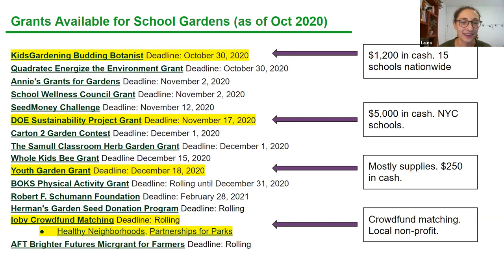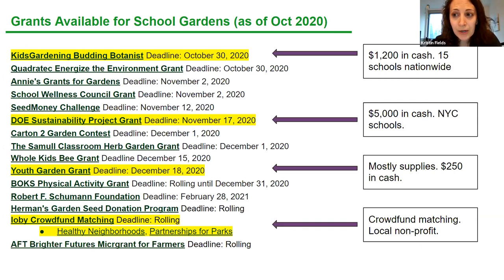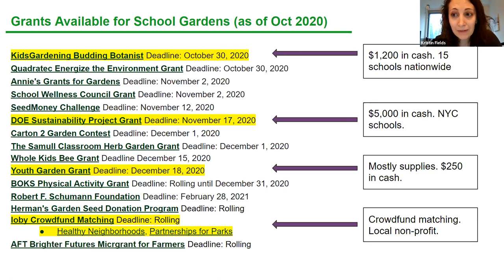Not highlighted on the list is the School Wellness Council Grant, due next month on Monday. I would prioritize these two — and anything this year that the DOE is specifically offering — because a lot of the national grants mean you're up against everybody nationally: schools in California, the Midwest, all along the East Coast. If you apply for the School Wellness Council Grant or the Office of Sustainability's grant, you're only up against New York City schools, so anything that narrows the playing field is definitely a good one for this year.